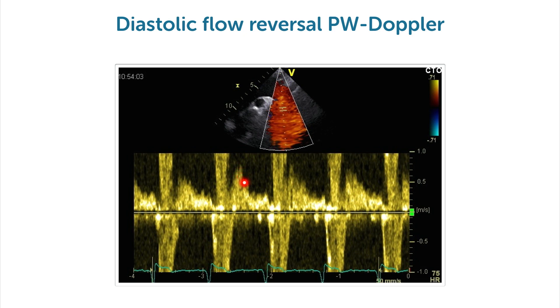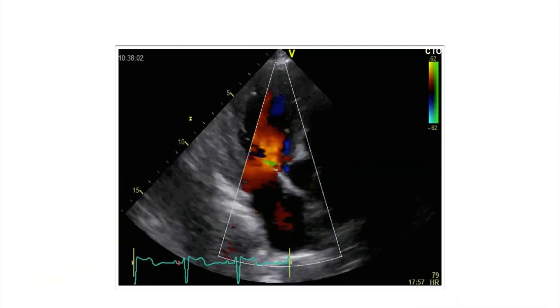We have to stop here because we're going into too many details — details we want to show you in the master class. For now, all you need to know is that probably the most important factor in quantifying aortic regurgitation is the color Doppler looking at it from a transthoracic approach, and your imaging qualities matter — take a look at this example.